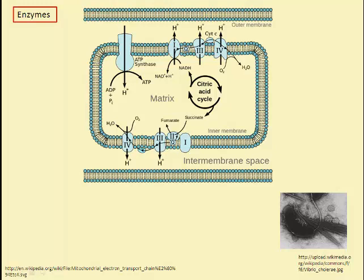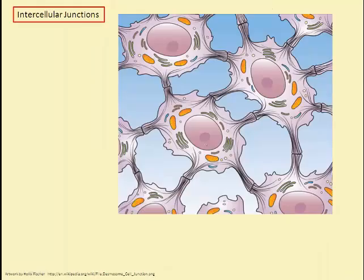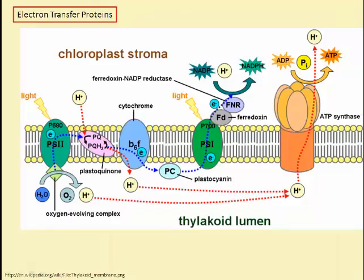In the mitochondrial membrane, there is ATP synthase. Proteins can also function as intracellular junctions — adjacent cell membrane proteins can hook together, binding cell membranes and providing passageways for cells to share materials. There are also electron transfer proteins, which transfer electrons from one molecule to another, as seen in the thylakoid membrane of chloroplasts, where electrons pass from protein to protein to ultimately produce ATP.